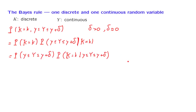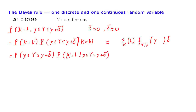Let us rewrite those expressions using PMF notation and PDF notation. The probability that a discrete random variable takes on a certain value is just the PMF of this random variable evaluated at a particular point. The probability that a continuous random variable Y takes values inside an interval is approximately equal to the PDF of that random variable times the length of the interval. Since we are talking about the probability of being in a small interval conditioned on a certain event, we should be using a conditional PDF — the conditional PDF conditioned on the discrete random variable K taking on the specific value little k.